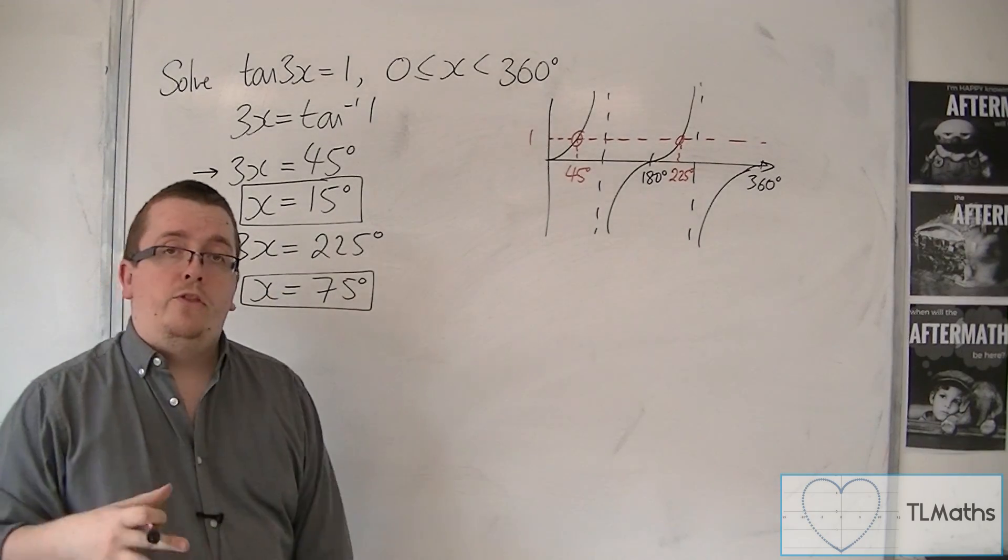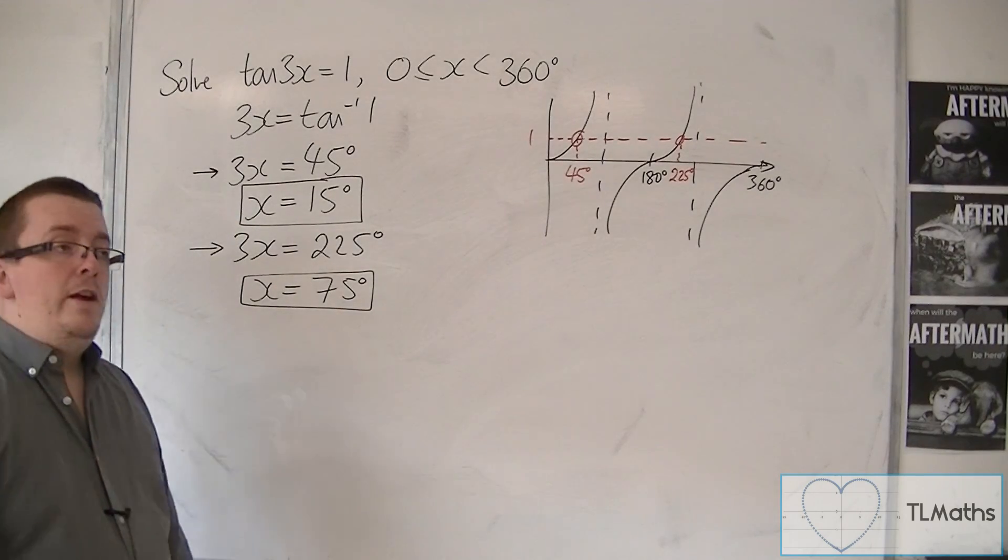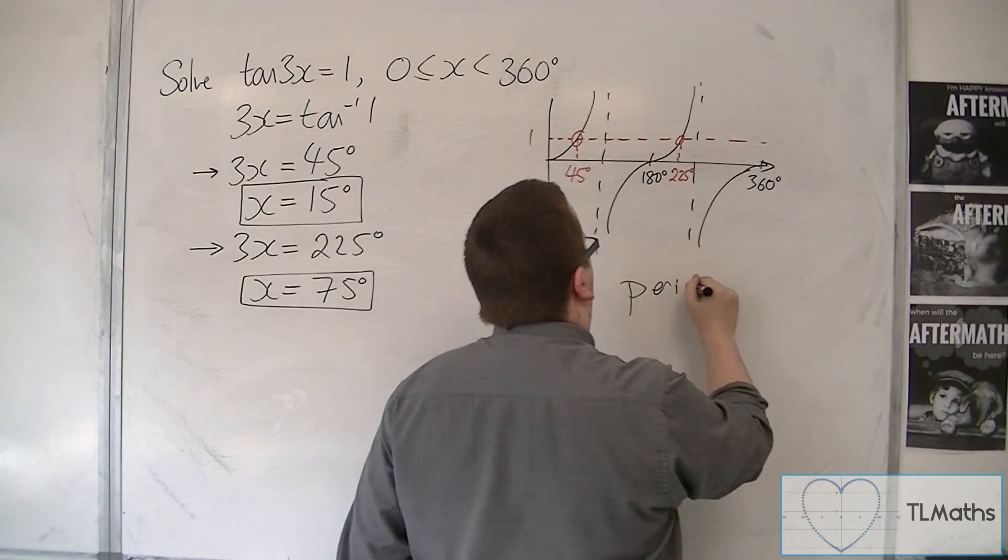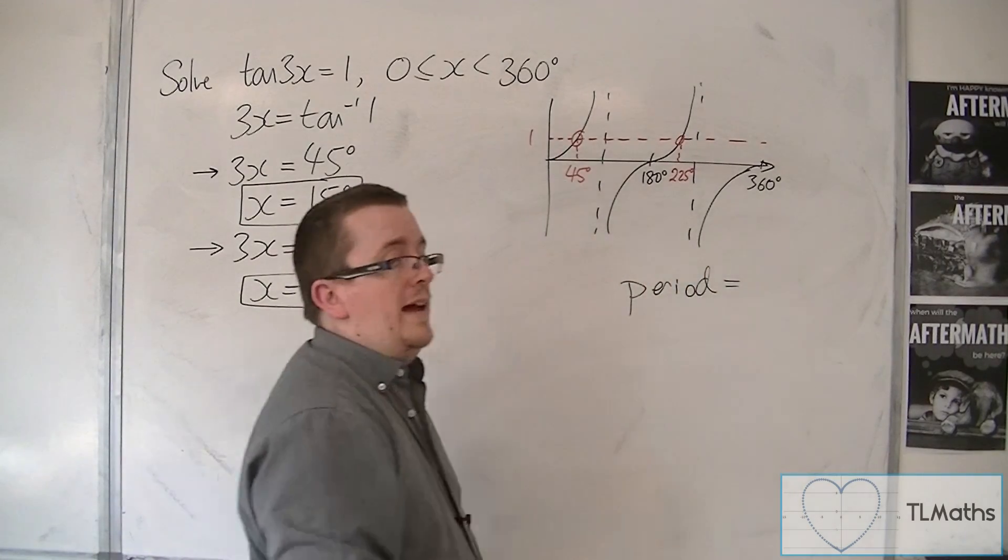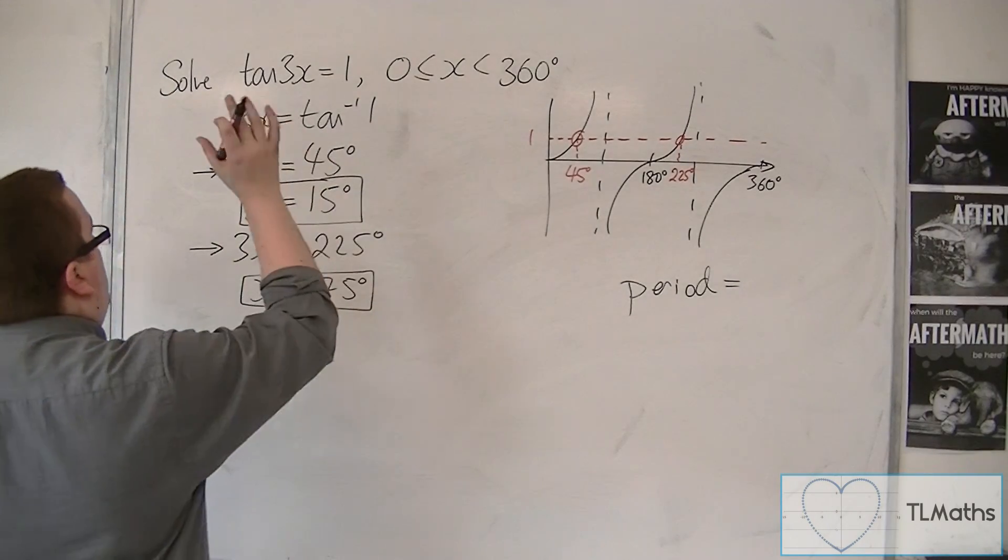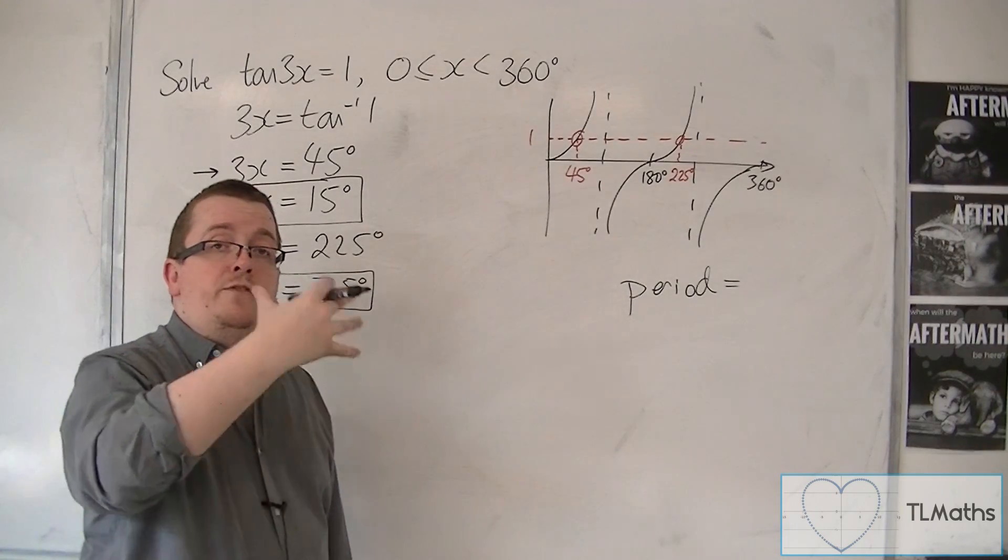between 0 and 360. So we now need to ask ourselves, what is the period of tan(3x)? Now, tan usually has a period of 180 degrees. Now tan(3x) will have a period of 180 degrees divided by 3.